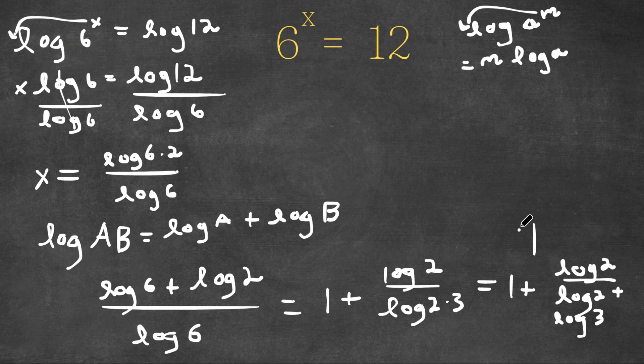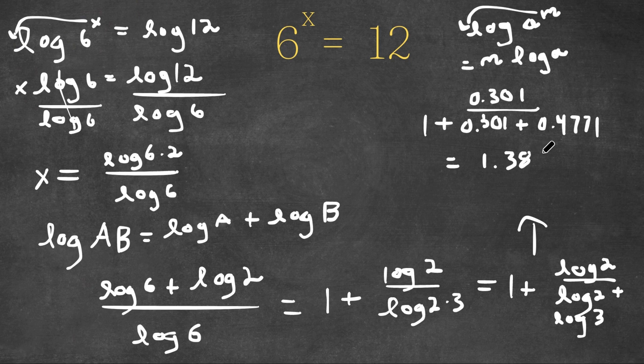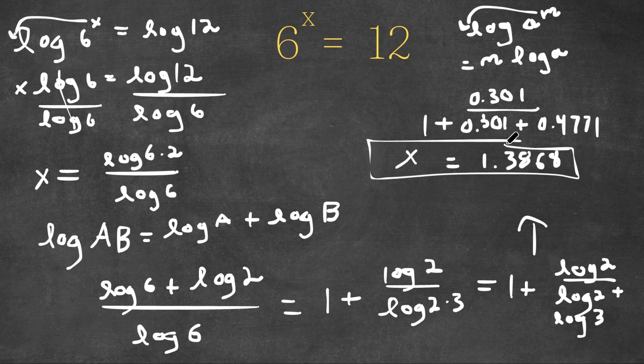Now I'm going to write the continuation up here. Log 2 is equal to approximately 0.301. Now we are dividing this by 0.301 plus log 3 is equal to approximately 0.4771. And now this is equal to approximately 1.3868. So x is equal to 1.3868. So that's our answer.